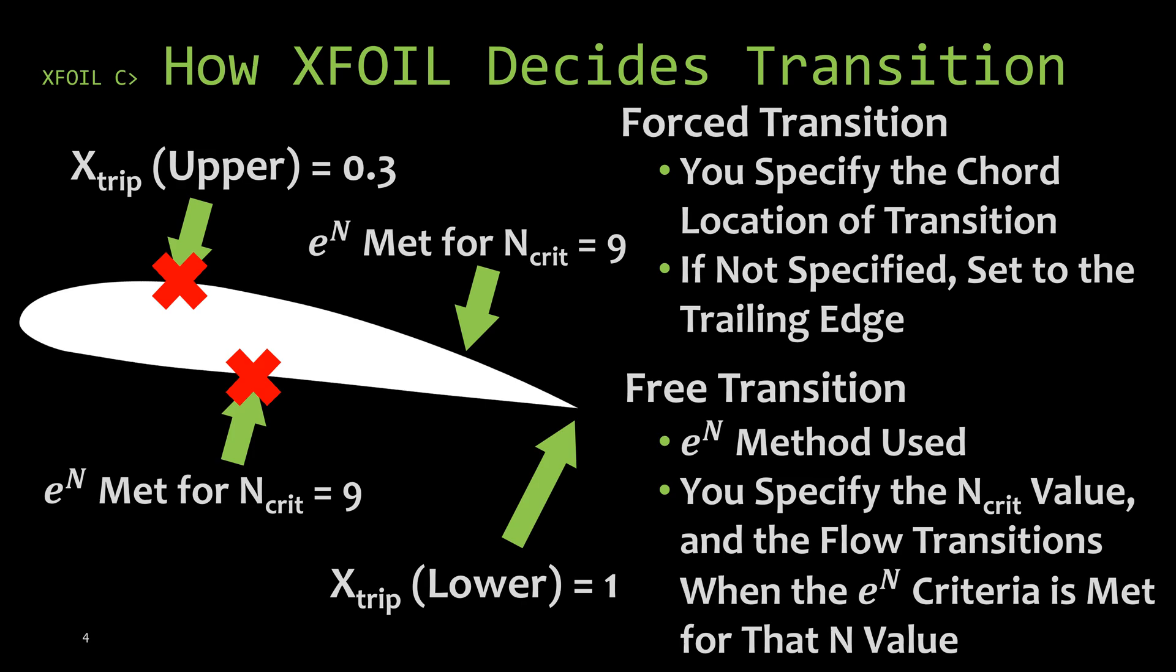The second thing that XFOIL looks for is what's called a free transition. This is an e to the n method and this works in that you specify the critical n value and the flow transitions when the e to the n criteria is met for that n value.